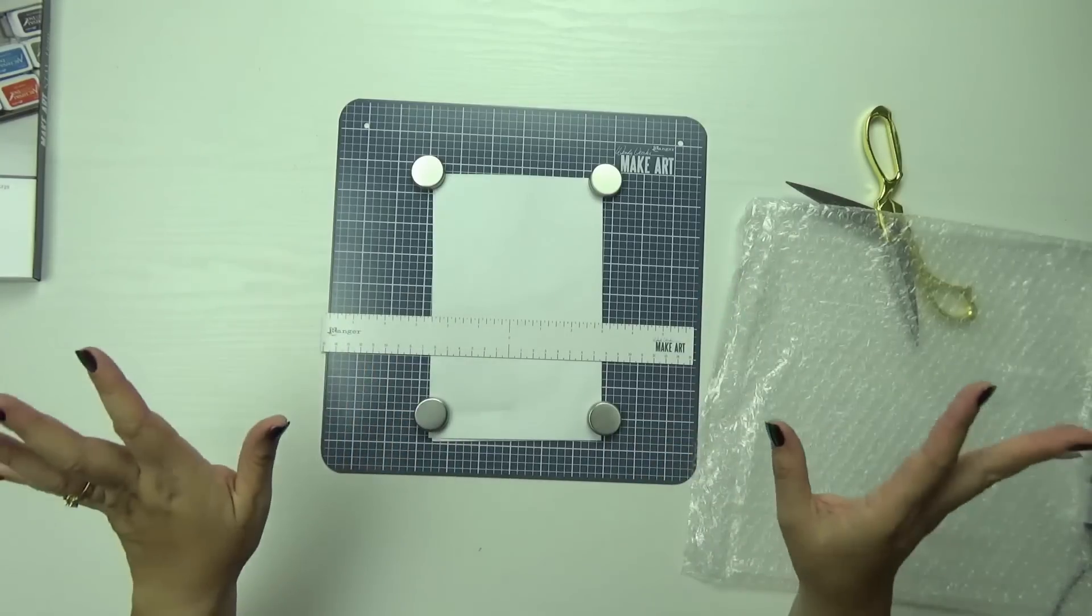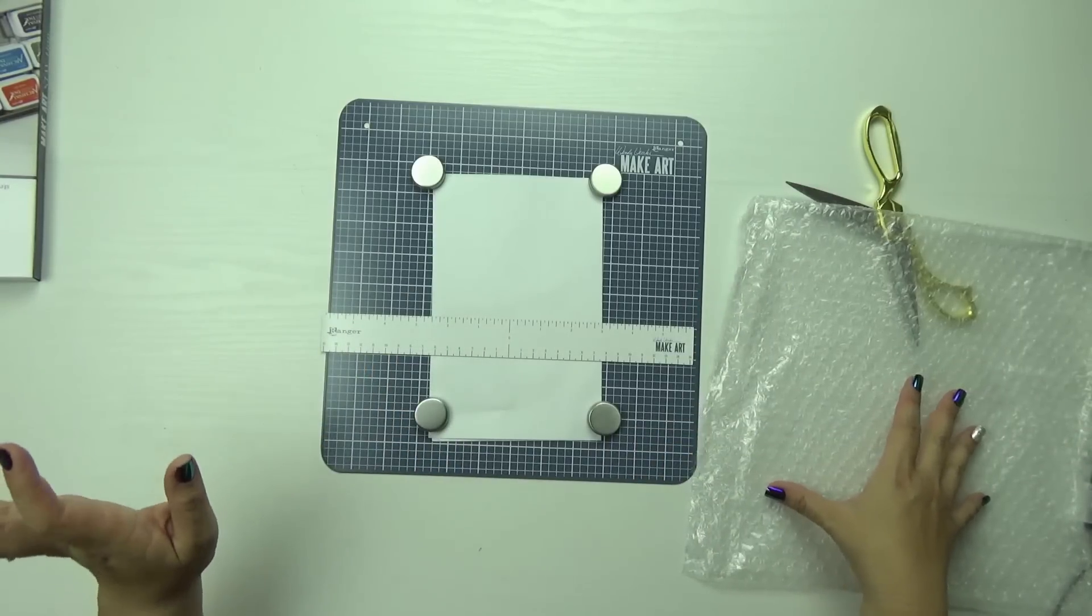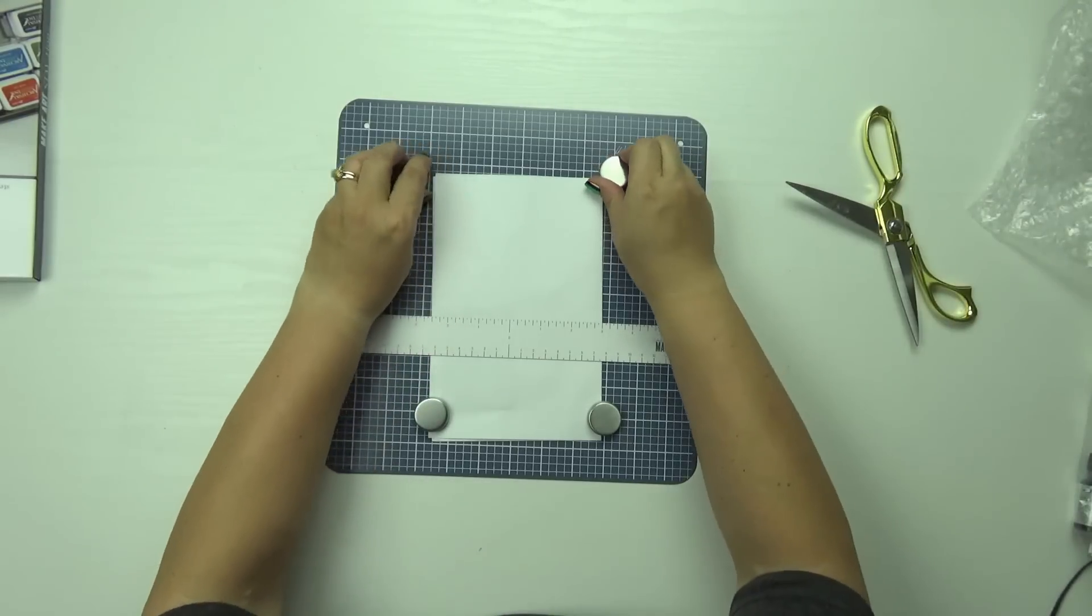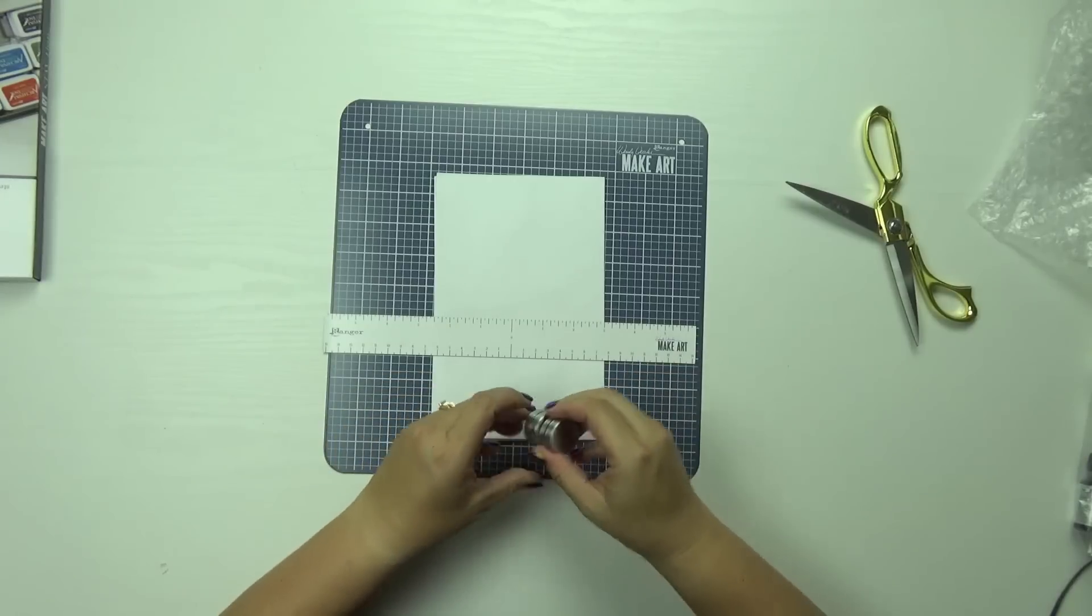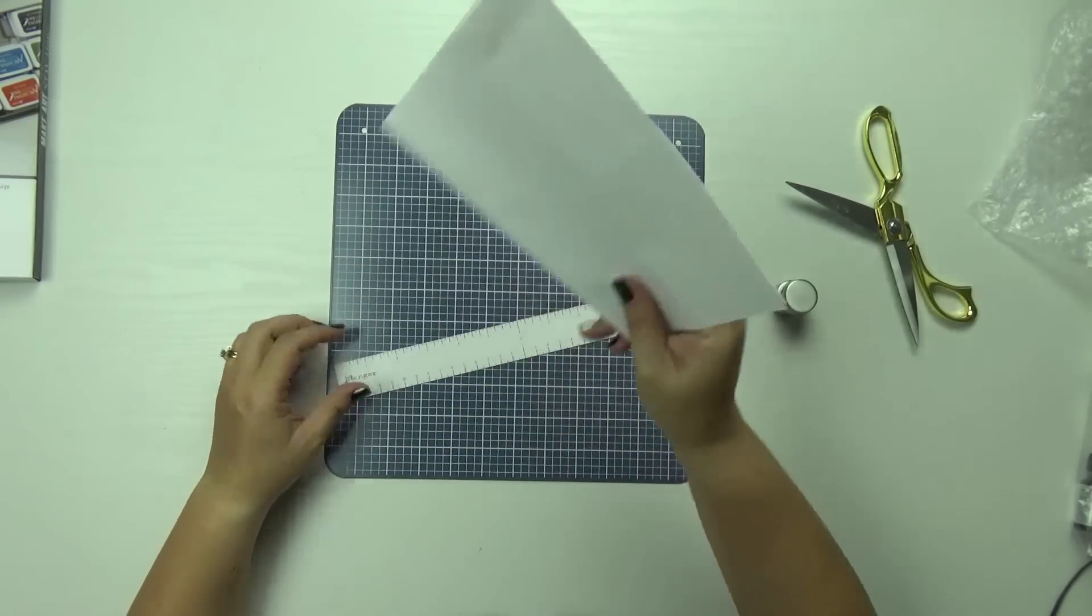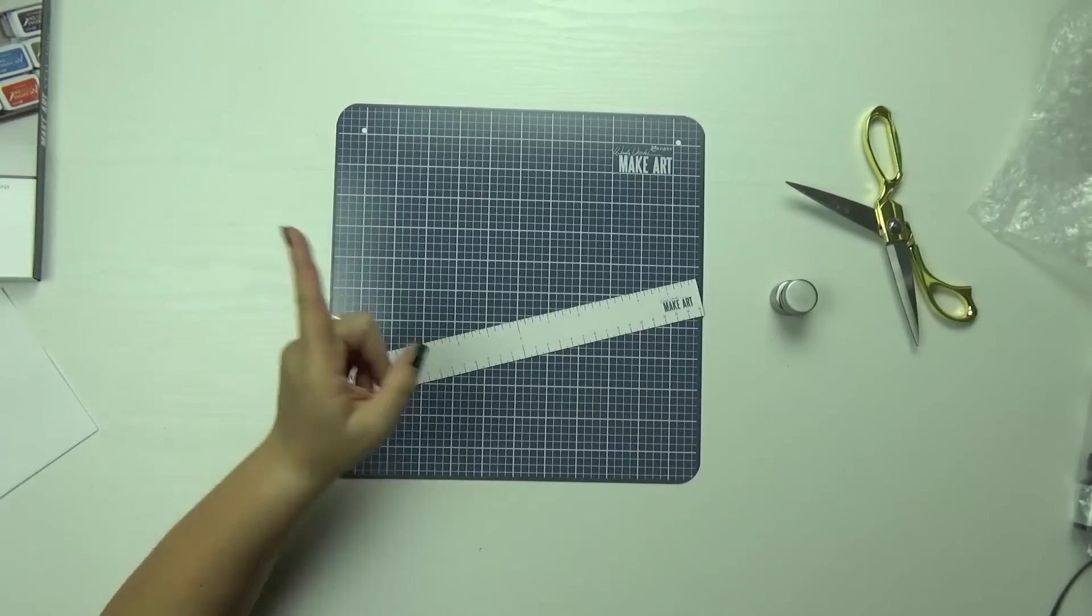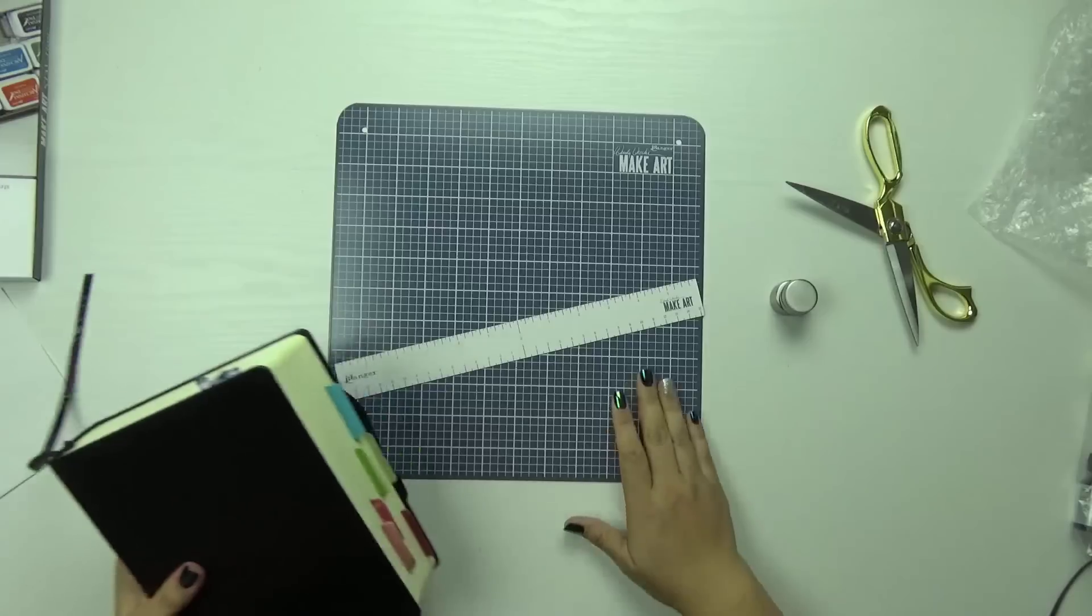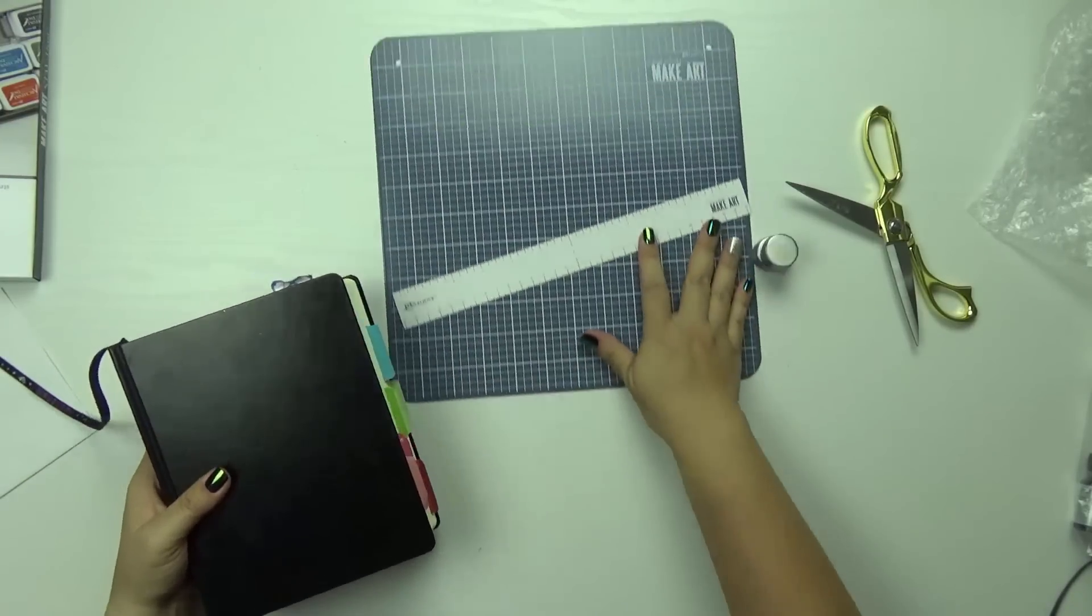maybe put the stencil down with the magnets and then you could stencil and nothing would move, which is amazing because for me, holding down a stencil is, I'm not good at it. The stencil just goes everywhere and it's a hot mess, but I don't care because it's fun. So I play with it.